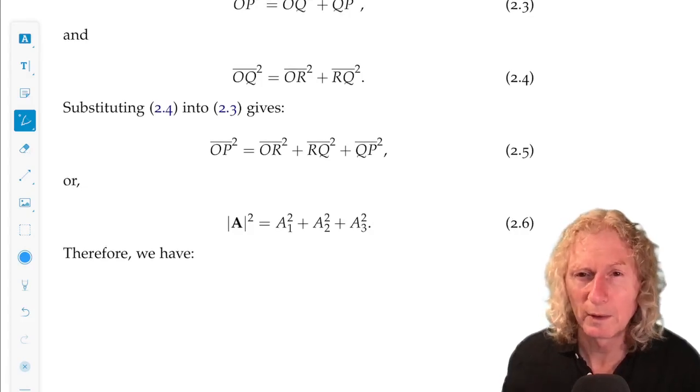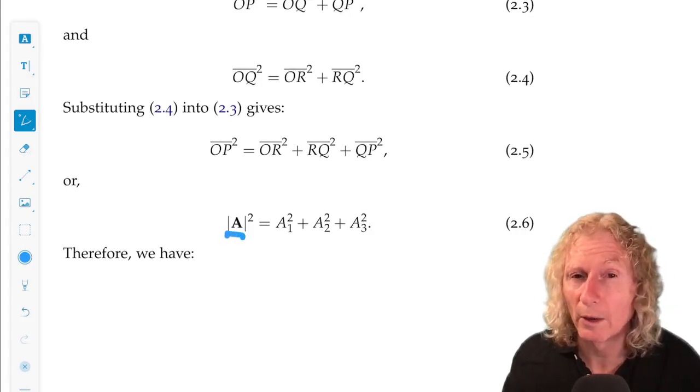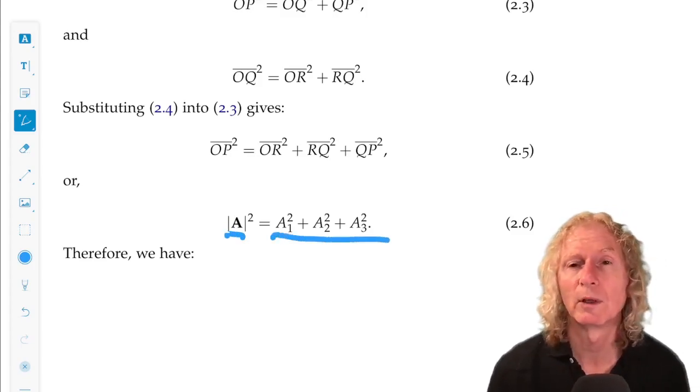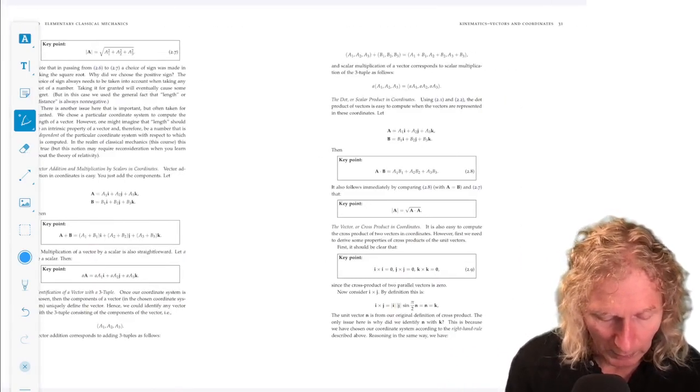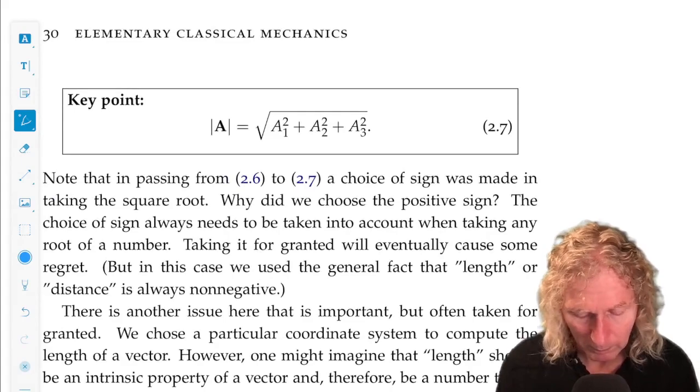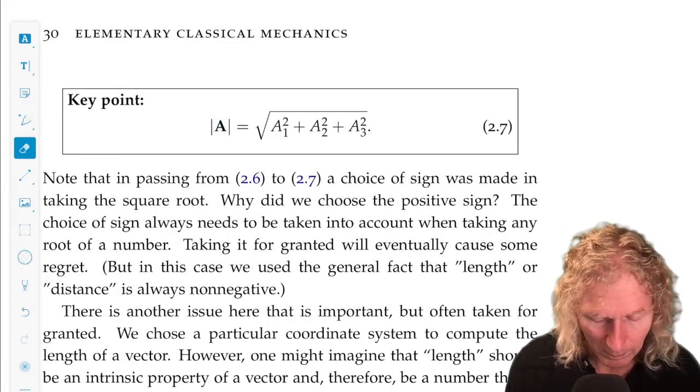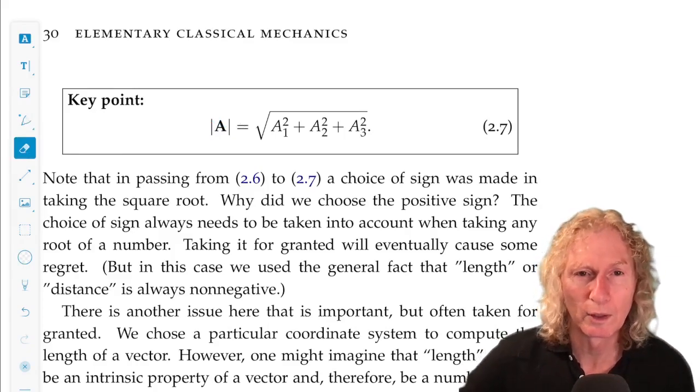But, using this simple geometry, we see that the length squared of the vector is the sum of the squares of the components. Very nice result. But if we just want the length, not the length squared, so the length of a is the square root of the sum of the squares of the components.